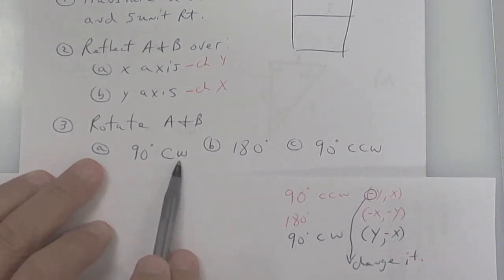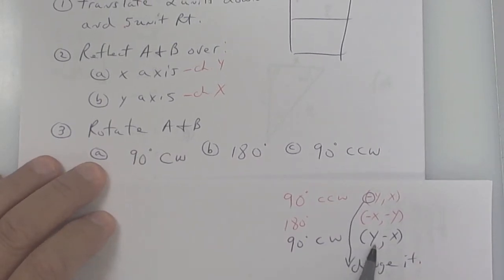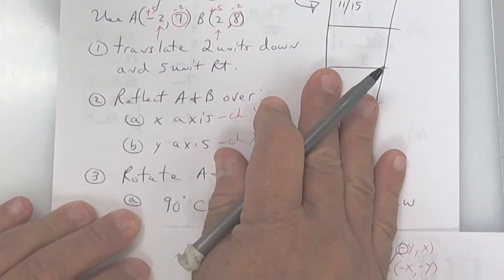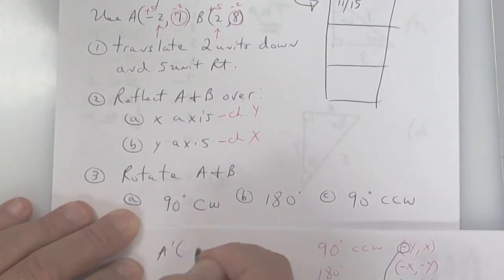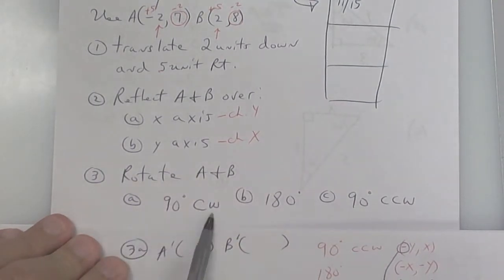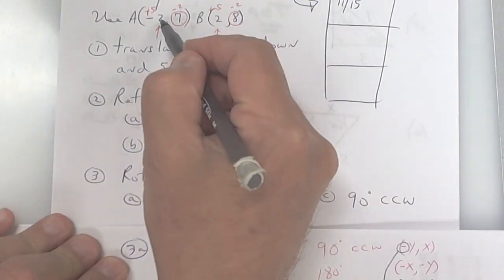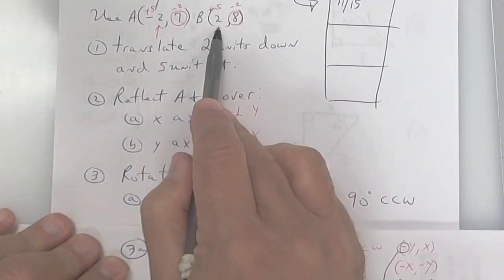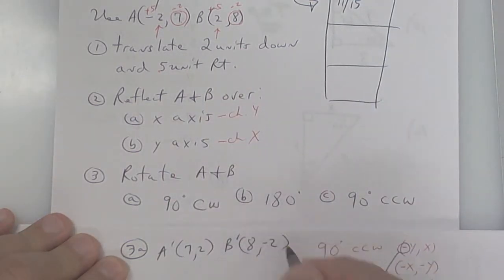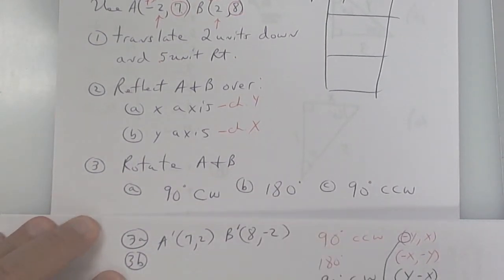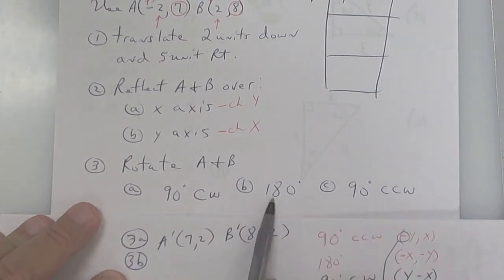So for 3a, 90 degrees clockwise: we switch them and change the x. Point A — change the x first, which is 2, so the answer is 7 and 2. For B prime, change the x which gives negative 2, then switch them, so we get 8 and negative 2. That should be the 90 degrees clockwise result.